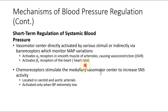Chemoreceptors in the medulla's vasomotor center increase sympathetic nervous system activity. You also have a little sinus in your carotid arteries detecting your chemical environment — do you have enough oxygen, what's your carbon dioxide level — and that informs the brain on what to do with cardiac output.